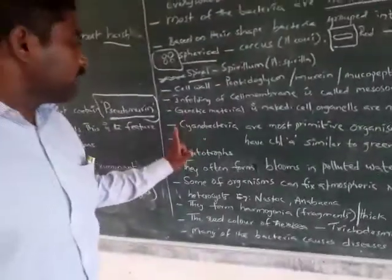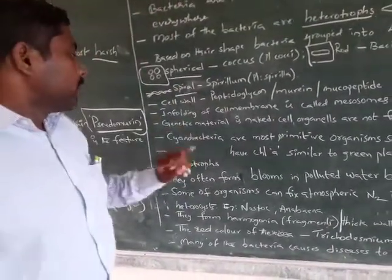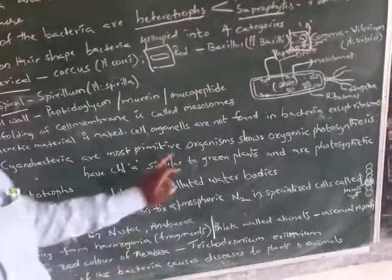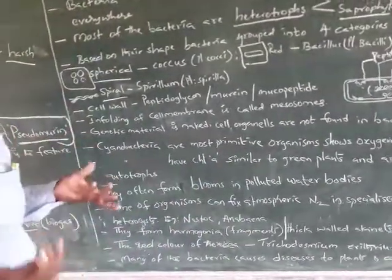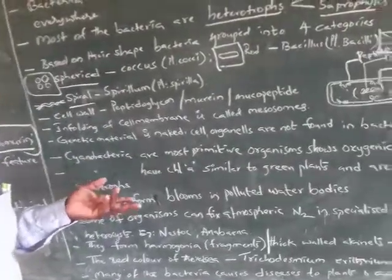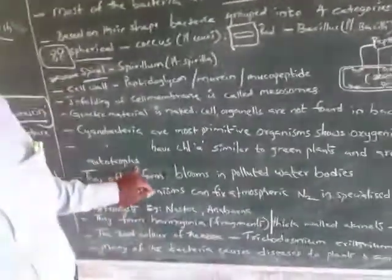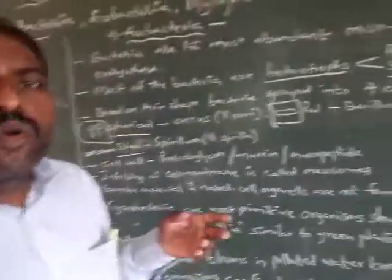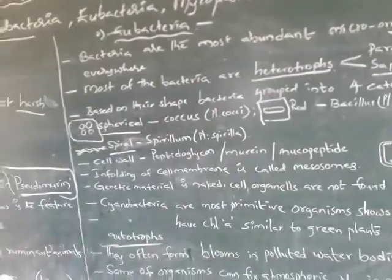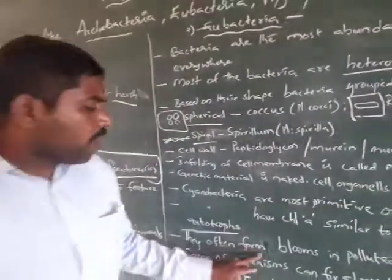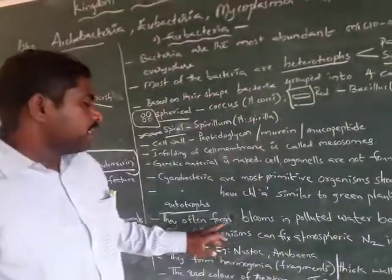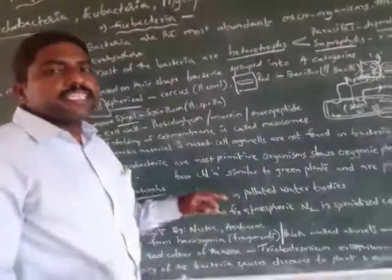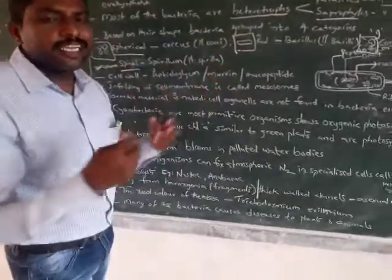Cyanobacteria also come under eubacteria. They are the most primitive organisms and show oxygenic photosynthesis. They contain chlorophyll A, similar to plants, making them photosynthetic autotrophs that synthesize their own food. They often form blooms in polluted water bodies, with their population increasing rapidly.